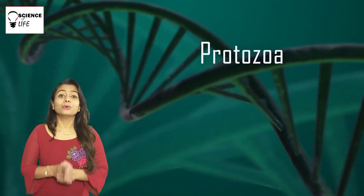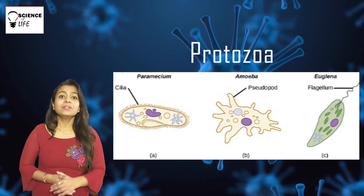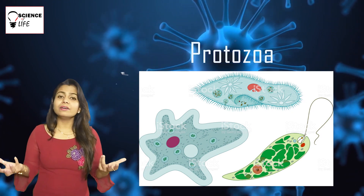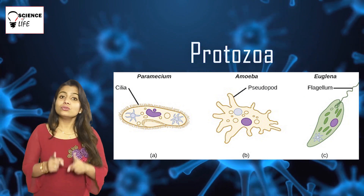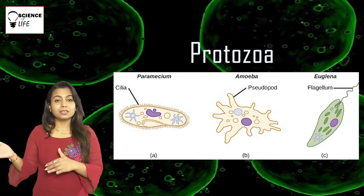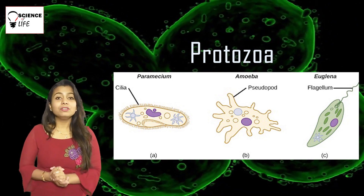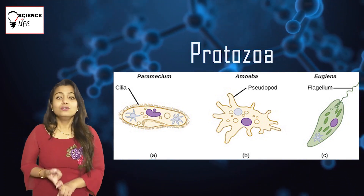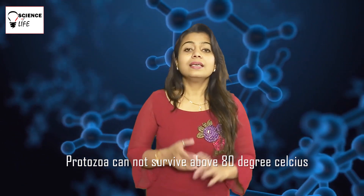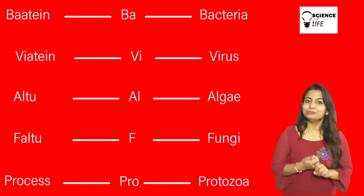The last group is protozoa. Protozoa are all unicellular and we cannot see them through our naked eyes. Examples of protozoa are amoeba and paramecium. For amoeba, they have pseudopodia — 'pseudo' means false and 'podia' means feet — false feet, which amoeba use for locomotion. Paramecium have cilia, which are hair-like structures that help them in movement. Also remember: protozoa cannot survive in temperatures above 80 degrees Celsius and they need moisture to live.